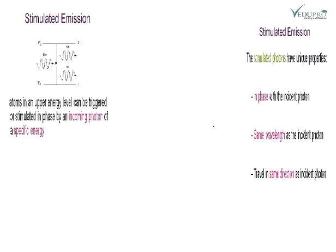The third process, which is a very important process of laser — the laser action is totally dependent on this third process. The principle of laser works on the stimulated emission, and this is the third process. What is stimulated emission? As you see in your screen, the atom in the upper energy level can be triggered or stimulated in phase by an incoming photon of a specific energy.